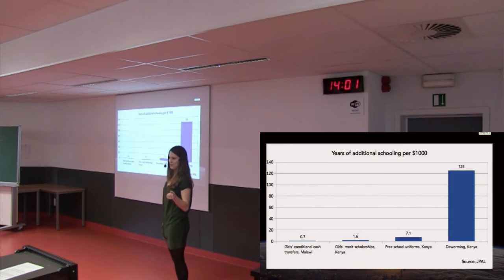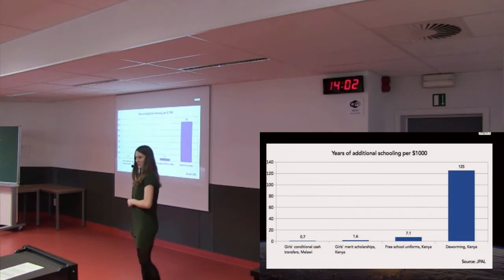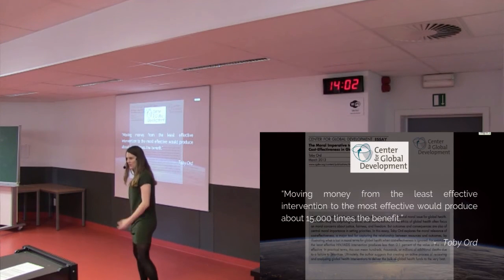So by instituting a deworming program in Kenya, for $1,000, they're able to buy 125 years of additional schooling. That's incredible. That's 100 times better. And it can get even more than that.